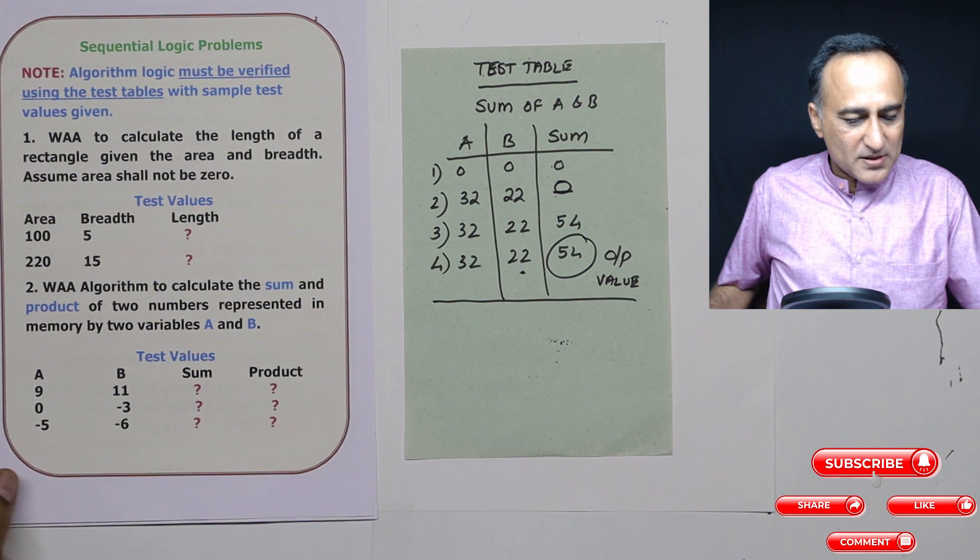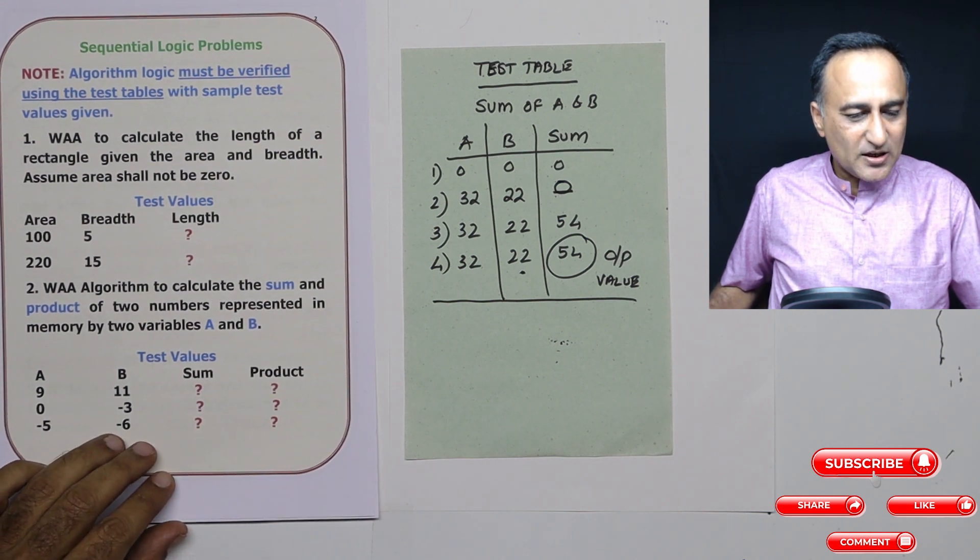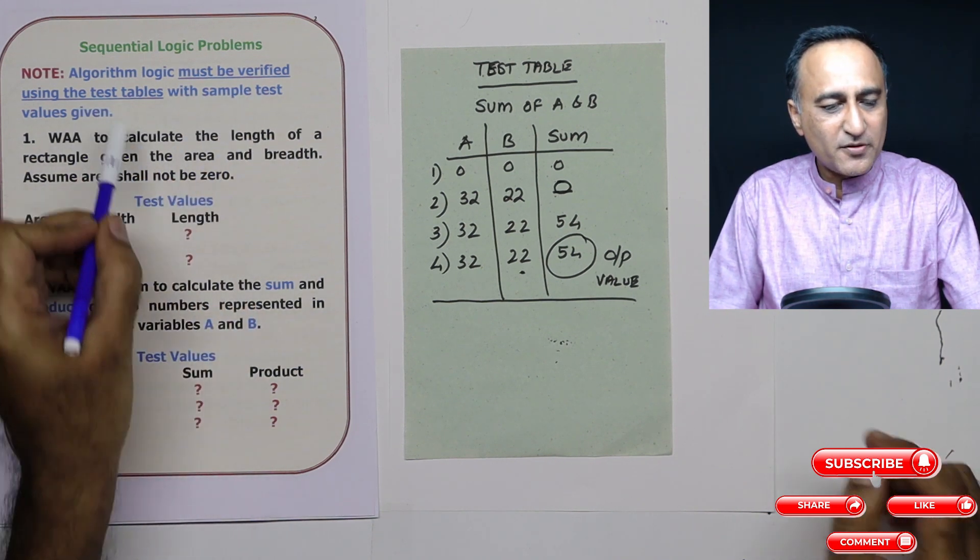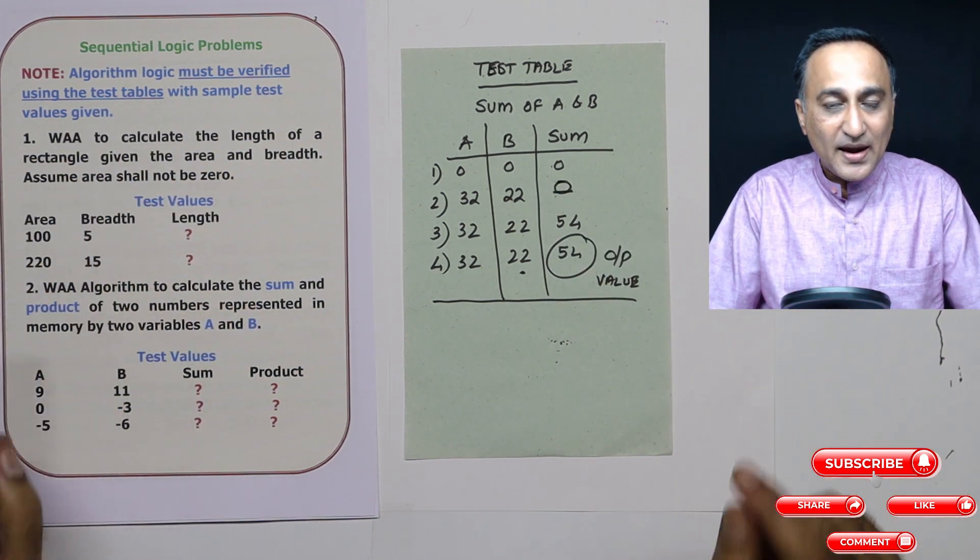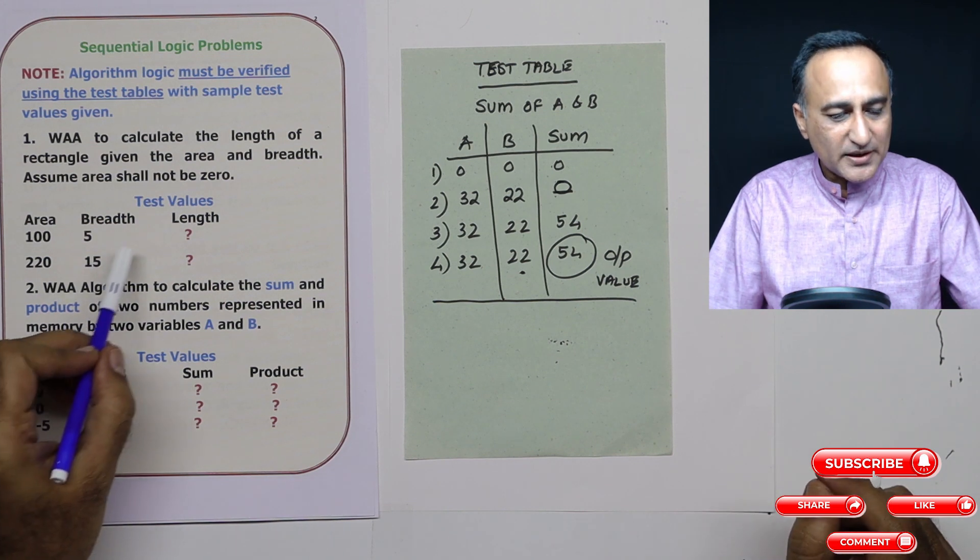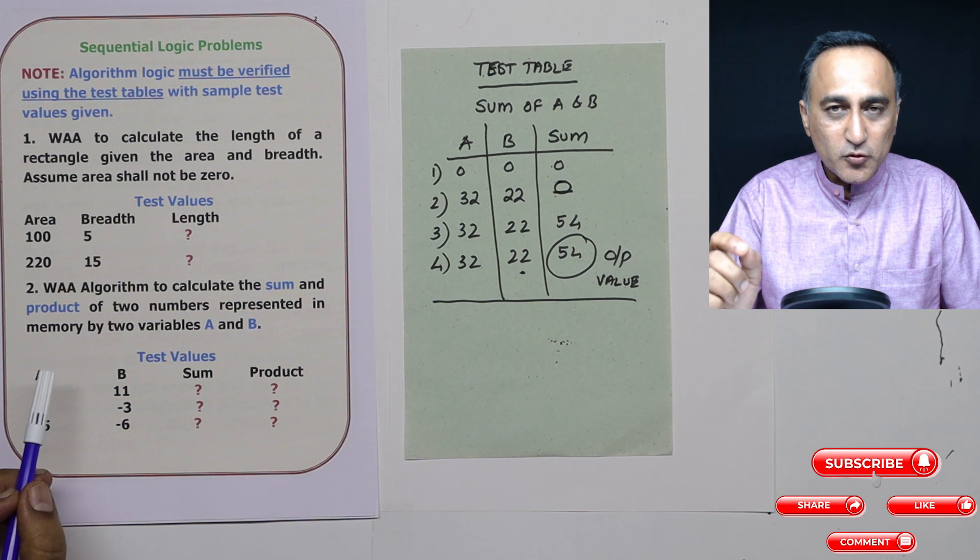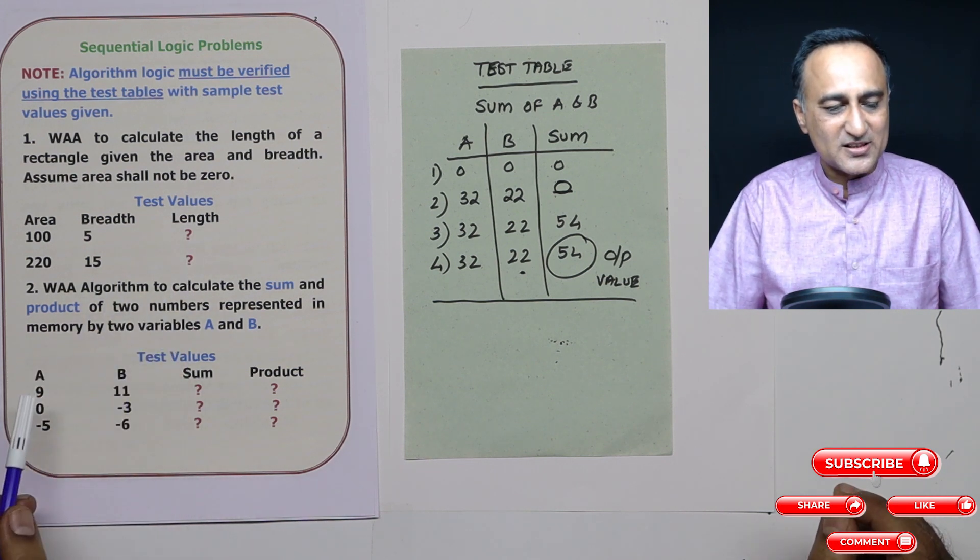What I'm doing is the first problem is about sequential logic. Again, I'm reminding you the algorithm logic must be verified using a test table like this. And what I will do is most of the time I will give you sample input and output values. And you should using the sample input and output just see if you're getting the correct result.